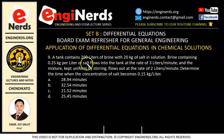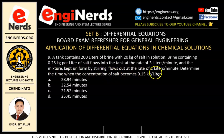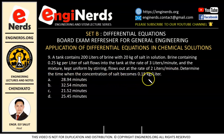So let's first read our problem. A tank contains 200 liters of brine with 20 kilograms of salt in solution. Brine containing 0.25 kilogram per liter of salt flows into the tank at the rate of 3 liters per minute. The mixture, kept uniform by stirring, flows out at the rate of 2 liters per minute. Determine the time when the concentration of salt becomes 0.15 kilogram per liter.